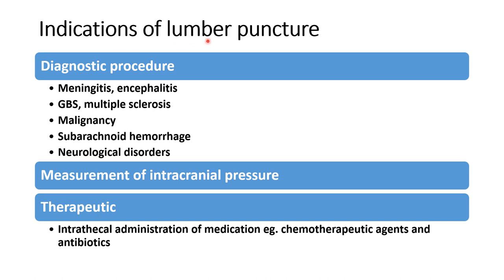The indications of lumbar puncture are divided into diagnostic and therapeutic indications. For diagnostic indications: whenever we are suspecting meningitis or encephalitis for CSF analysis, we perform lumbar puncture. Also in Guillain-Barré syndrome, multiple sclerosis, and malignancies for CNS involvement, we perform lumbar puncture. To diagnose subarachnoid hemorrhage and in various neurological disorders, we also perform lumbar puncture for CSF analysis.